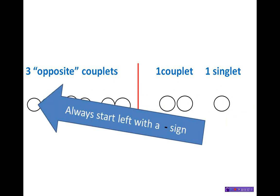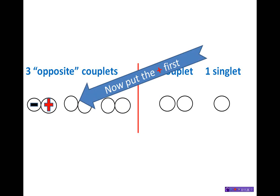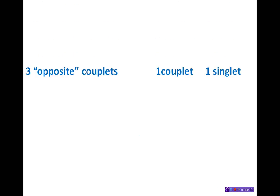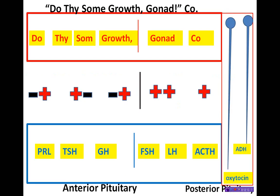First — and most important — always start on the left with a negative sign. Because it's an opposite couplet, that obviously means the next is a positive. For the second couplet, since the first started with a negative, the second couplet starts with a positive — we flip-flop the couplet. Then we flip-flop again: negative, then positive. The right side is easy — everything is positive. So the full pattern is: negative-positive, positive-negative, negative-positive, then positive, positive, positive. This is probably the trickiest part, but once you've got it, the rest of the mnemonic is very easy.